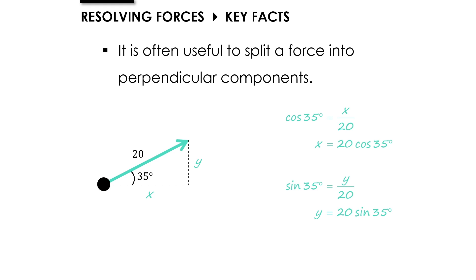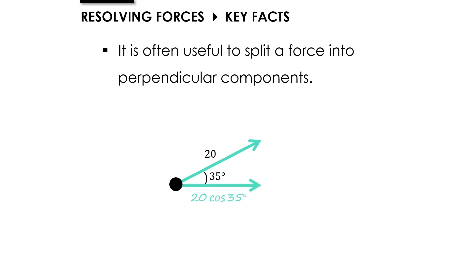So what we're going to do is take the 20 Newton force and replace it with two forces which have an equivalent effect: a horizontal force of 20 cos 35 and a vertical force of 20 sine 35. By doing that, we can simplify a lot of 2D force calculations.